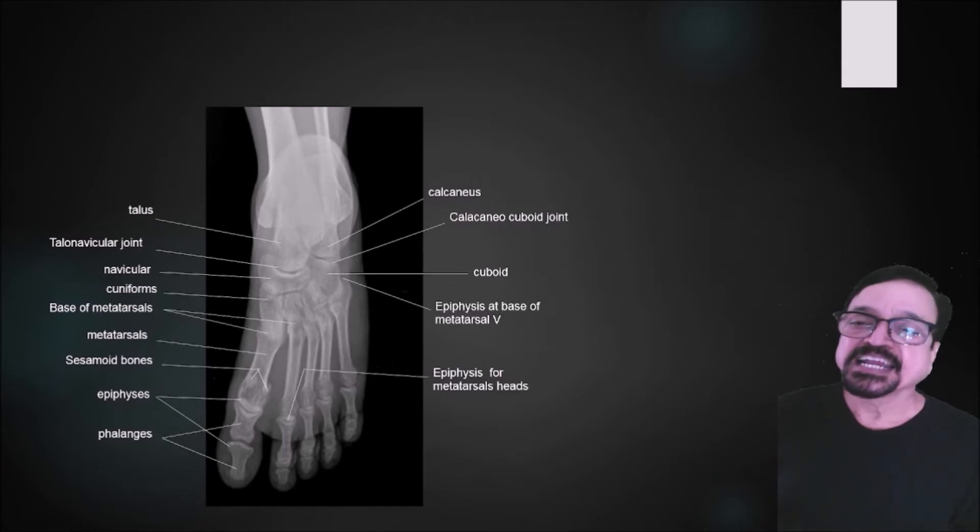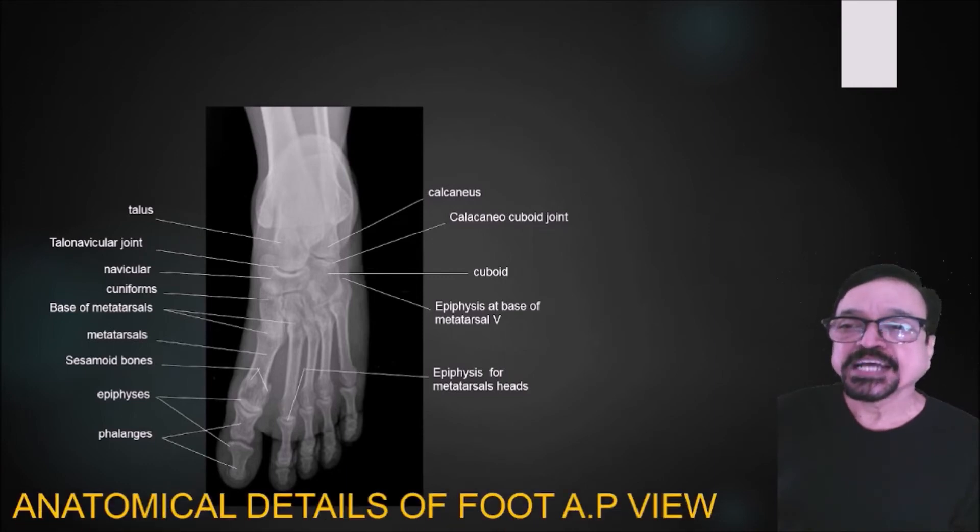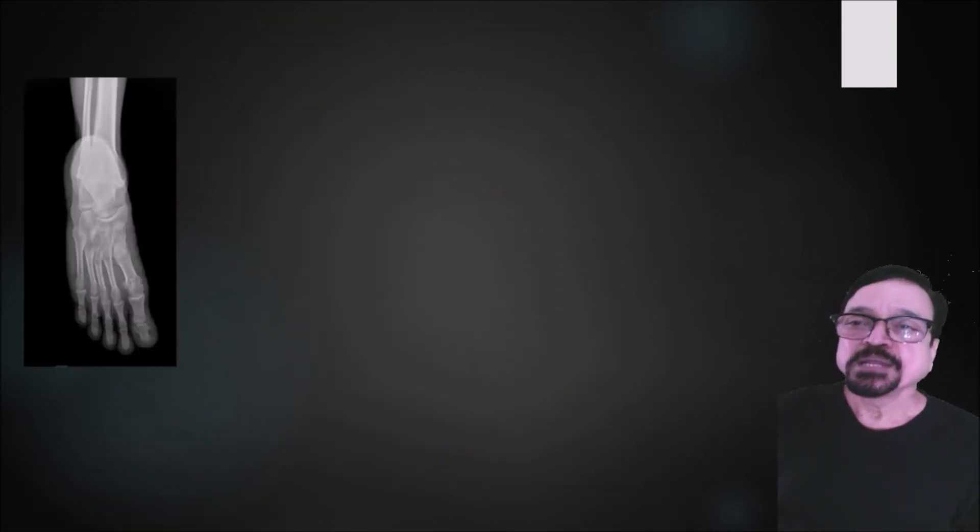The entire bone will not be seen in the oblique projection, so AP has to be there. Also it has to be supported by the oblique projections. Now you can see this, this is the second tarsal bone I am showing you.